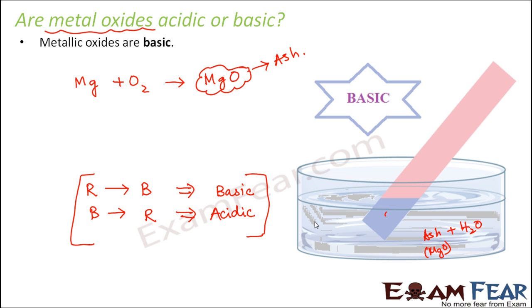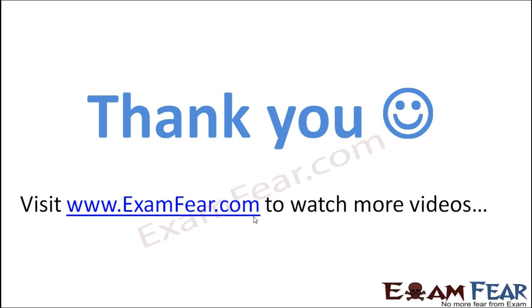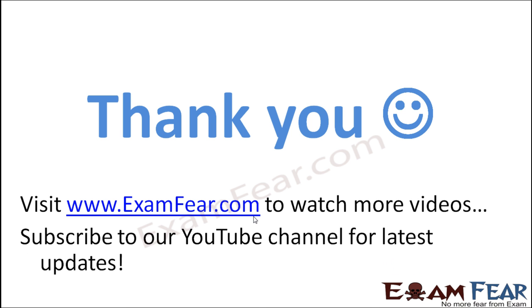If you try this experiment with other metal oxides, you will receive the same result. For example, take some rust from an iron object, mix it with water as best you can, and dip a litmus paper — you will see the red litmus turn blue, showing that rust is also basic in nature. We conclude that all metal oxides are basic in nature. Please visit examfear.com to watch more educational videos. Do not forget to like and subscribe to the YouTube channel for latest updates.